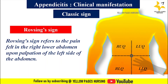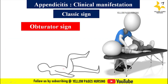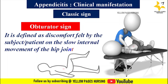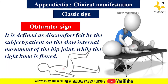The next sign is the obturator sign. The obturator sign is a clinical sign of acute appendicitis, defined as discomfort felt by the patient on slow internal rotation of the hip joint while the right knee is flexed. It indicates an inflamed pelvic appendix that is in contact with the obturator internus muscle.